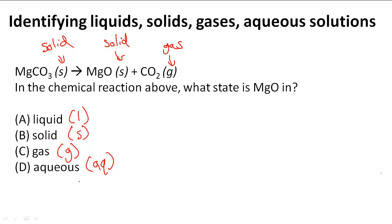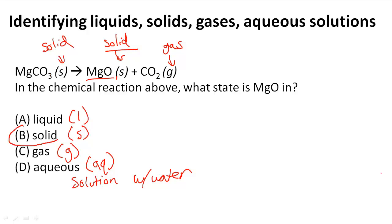Aqueous is interesting because it means it's a solution with water. The water and whatever chemical it is are mixed together. When it's in an aqueous solution, it's in a liquid form, but it's combined with water. We use aqueous to indicate that. Notice that we only see S and G in this chemical equation — only solids and gases exist here. So we go to MgO and see what the parenthetical symbol says: S. That means it's in a solid state, so B is the answer to this question.